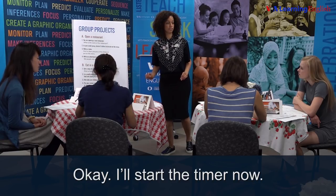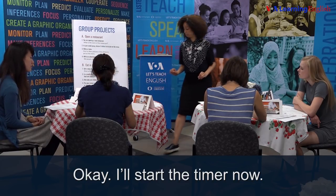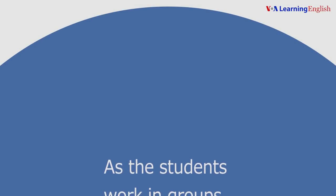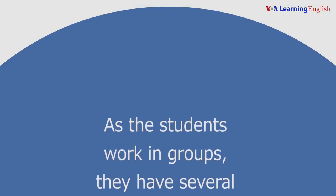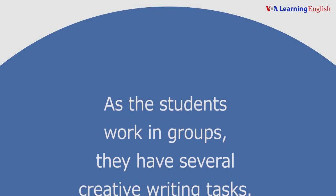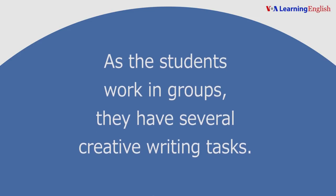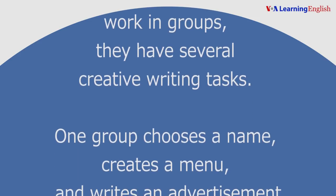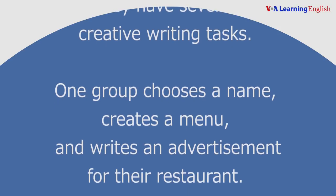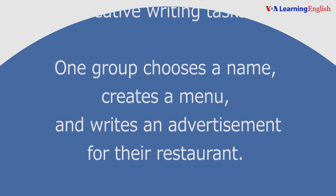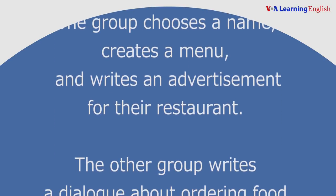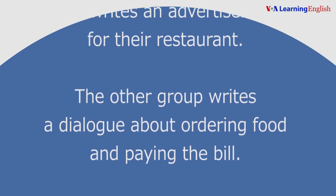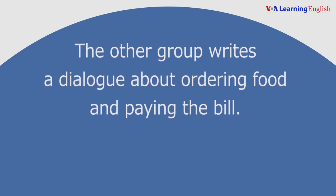Okay, I'll start the timer now. As the students work in groups, they have several creative writing tasks. One group chooses a name, creates a menu, and writes an advertisement for their restaurant. The other group writes a dialogue about ordering food and paying the bill.